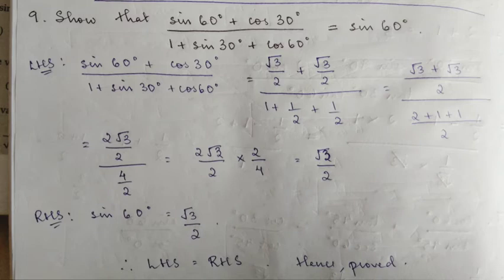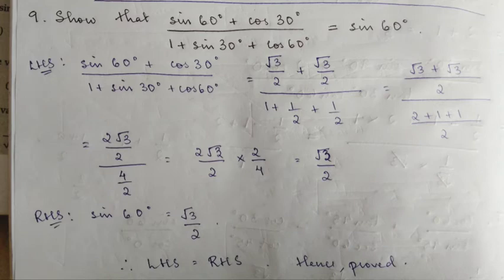I will show you how to do number 9 first. Question number 9: show that sin60 plus cos30 divided by 1 plus sin30 plus cos60 is equal to sin60. Left hand side equals sign.